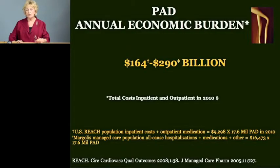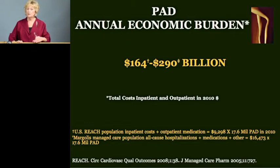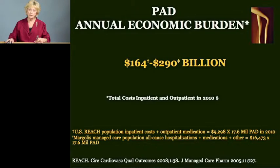The annual economic cost of PAD is between $164 and $290 billion. The $164 billion figure represents the per patient costs in the U.S. REACH registry, which included about 24,000 plus patients. The $290 billion represents the per patient costs in the Margolis managed care study. The primary difference between these two cost figures is that the REACH registry looked at cardiovascular and PAD costs only, whereas the managed care registry looked at all-cause hospitalizations. And therein lies the difference in the per patient costs.